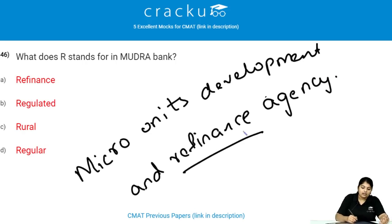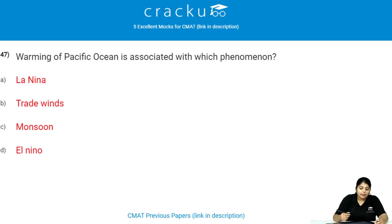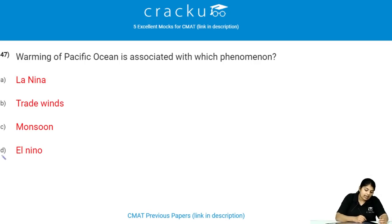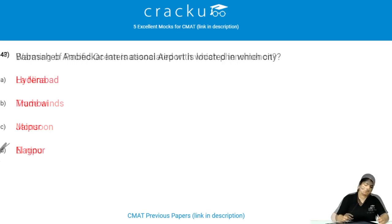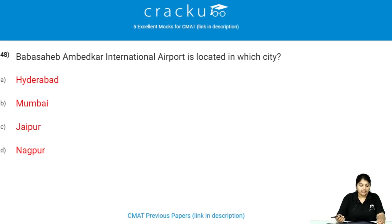Warming of the Pacific Ocean is associated with which phenomenon? During an El Niño event, the surface waters in the central and eastern Pacific Ocean become significantly warmer than usual. Babasaheb Ambedkar International Airport is located in which city? It is located in Nagpur city of Maharashtra.